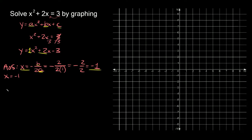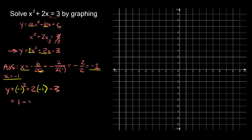The next thing we have to do is find the vertex. To find the vertex, plug in your x value into the equation we're graphing: y is equal to x squared plus 2x minus 3. We plug in negative 1 for x, so we get y is equal to negative 1 squared plus 2 times negative 1, minus 3. Negative 1 squared is positive 1, and 2 times negative 1 is negative 2. So 1 minus 2 minus 3: 1 minus 2 is negative 1, and negative 1 minus 3 is negative 4. So the vertex is at negative 1 comma negative 4.